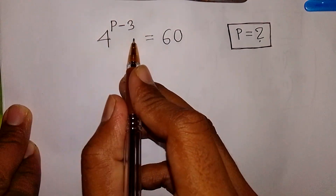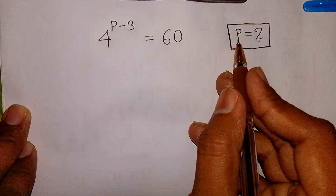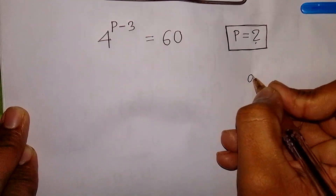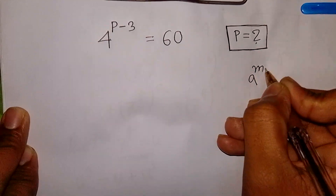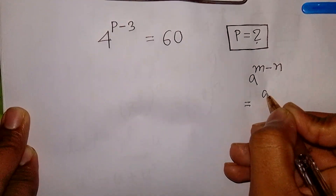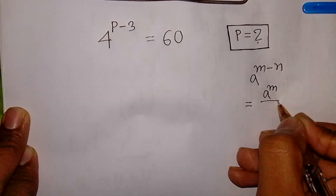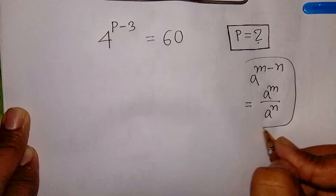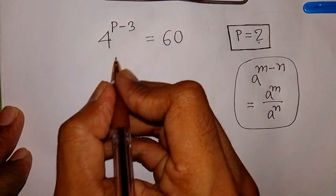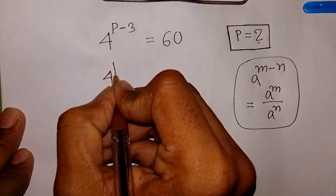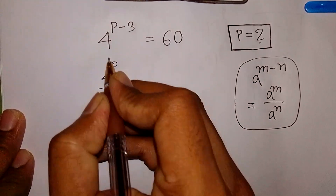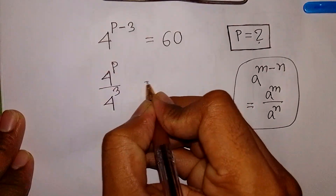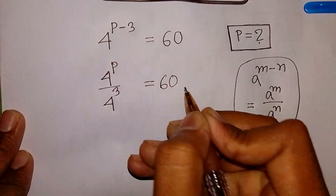4 power of p minus 3 is equal to 60. Find the value of p. First, we apply the exponential rule that a power of m minus n is equal to a power m over a power n. So here, 4 power of p minus 3 is the same as 4 power p over 4 power 3, and this is equal to 60.